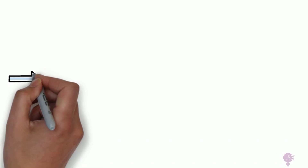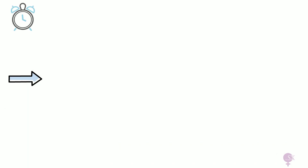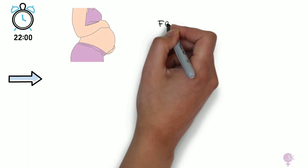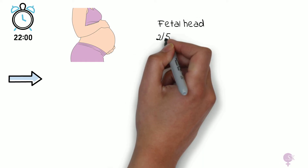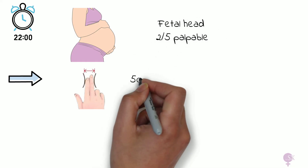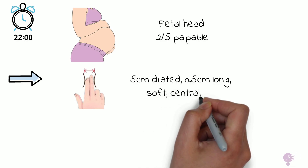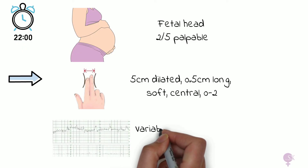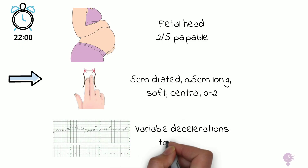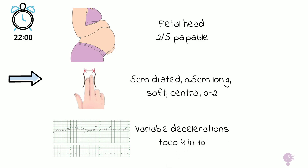It's 10pm now and 2 hours have passed. On reassessment, the fetal head is still palpable at 2 fifths. The cervix is still 5 cm dilated, 0.5 cm long, soft, central, minus 2. However, there are now variable decelerations on the CTG and contractions have picked up to 4 in 10.